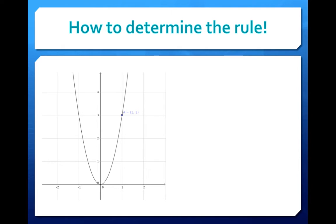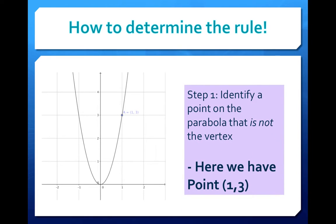Say you're given a graph, and they ask you, find the rule of this quadratic parabola. How do you do it? Well, your first step is to identify any point, hopefully an easy point, on the parabola that is not the vertex. You cannot use the point (0,0) for this. You need to use another point on the graph. So in this case, conveniently, I have a point that is just (1,3).